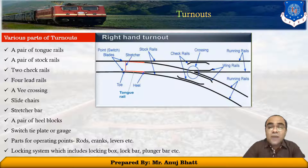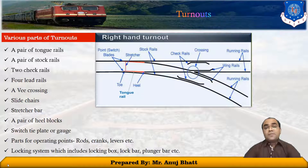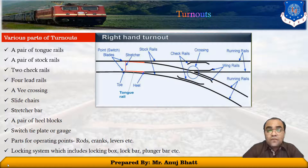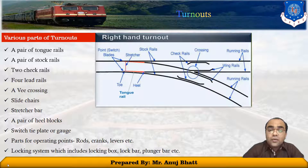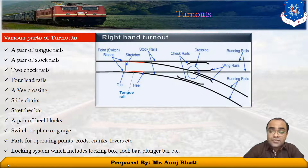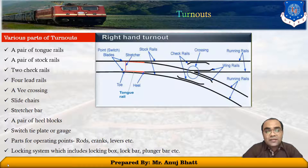The toes of both tongue rails are connected together by means of stretcher bars so that each tongue moves through the same distance or gap while changing the points. The switch tie plate is provided below the slide chairs. These are used to hold the track rigidity to the definite gauge distance at the toe of the switches. Rods, cranks, and levers are used to connect the tongue of the switch to the main rail or to isolate the tongue from the main rails.